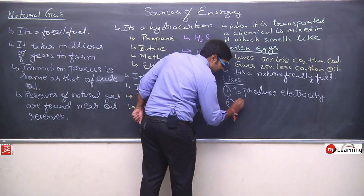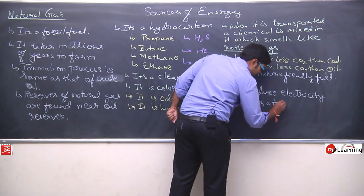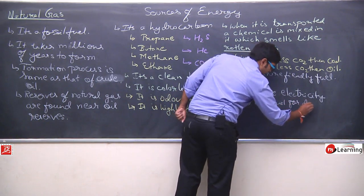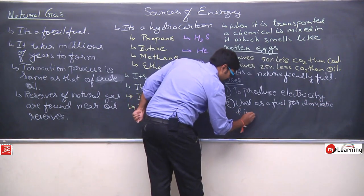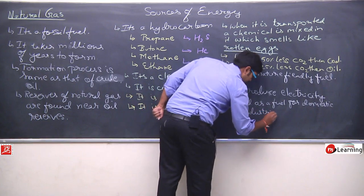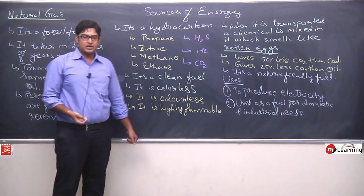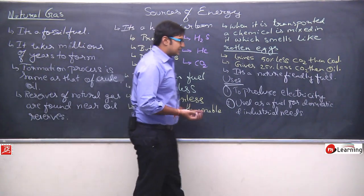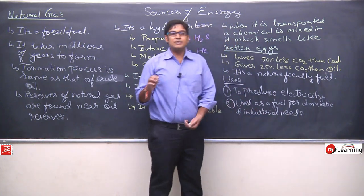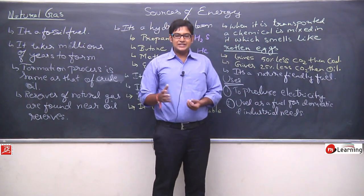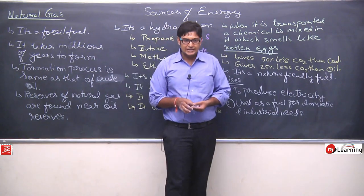Then after electricity, used as fuel for domestic and industrial needs. For domestic use like, the way we burn LPG and cook food, use it in cooking, in the same way, in some places natural gas is also used. Natural gas is transferred through pipeline, it is not sold in cylinders. It is transmitted through pipeline, and there natural gas is used like LPG, replacing LPG, natural gas is brought in.